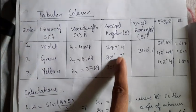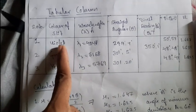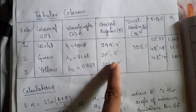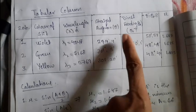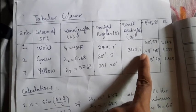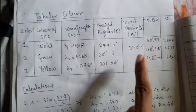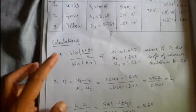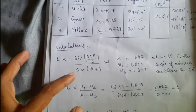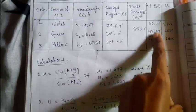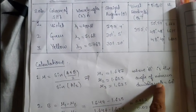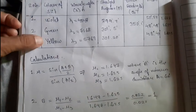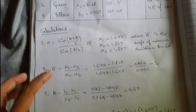Take the direct ray reading without keeping the prism on the prism table, then calculate theta by taking the difference of these two. Then calculate mu, the refractive index, with the help of the equation: sin of (A plus theta) divided by 2, over sin of A by 2. Theta is from this column, and A is the angle of minimum deviation for the prism. You will get mu 1, mu 2, mu 3 values for the corresponding spectral lines. Then go for the constants.